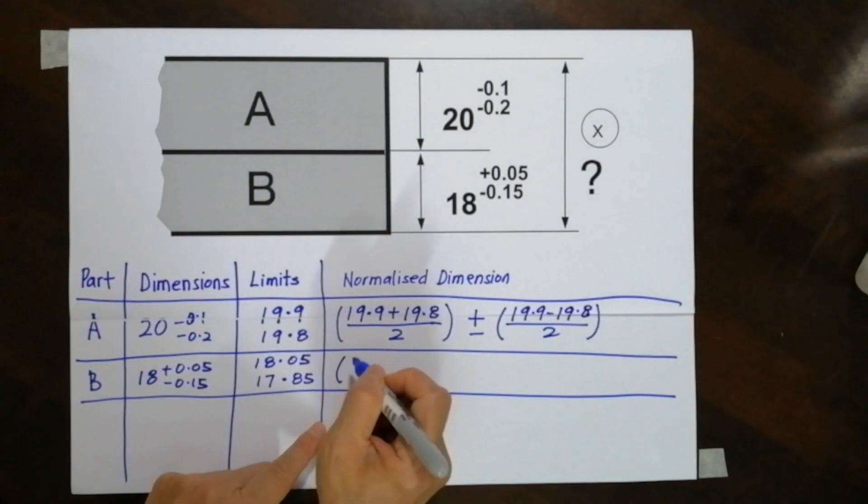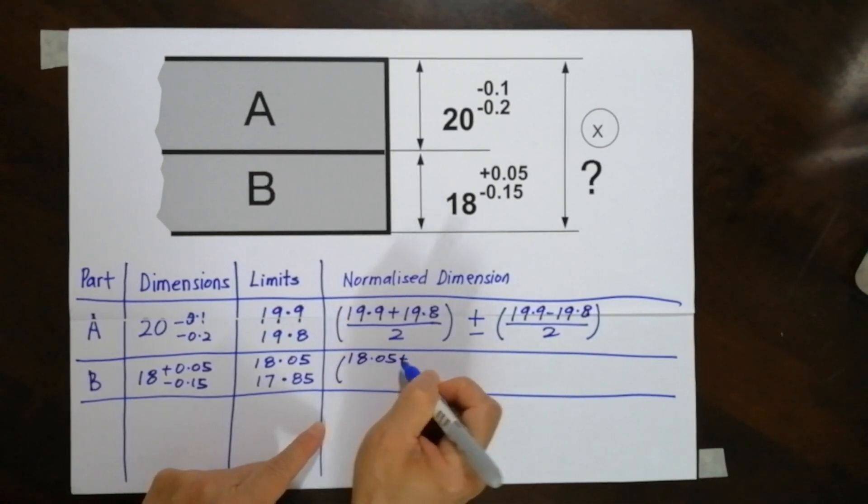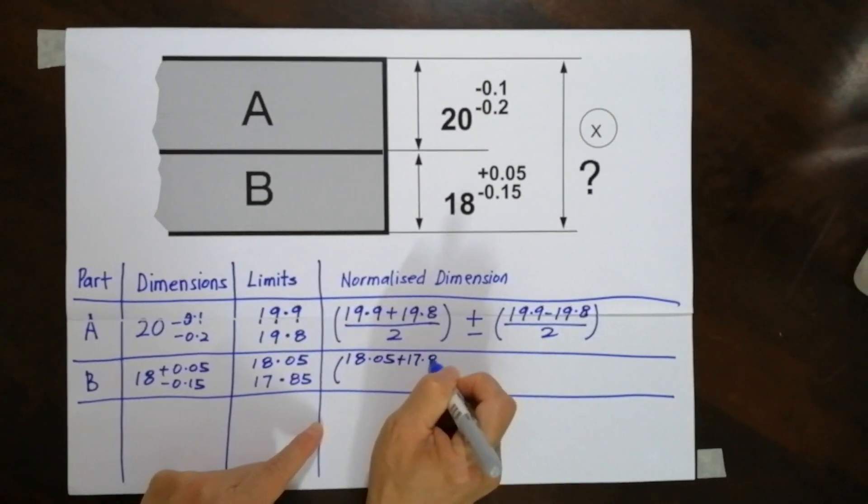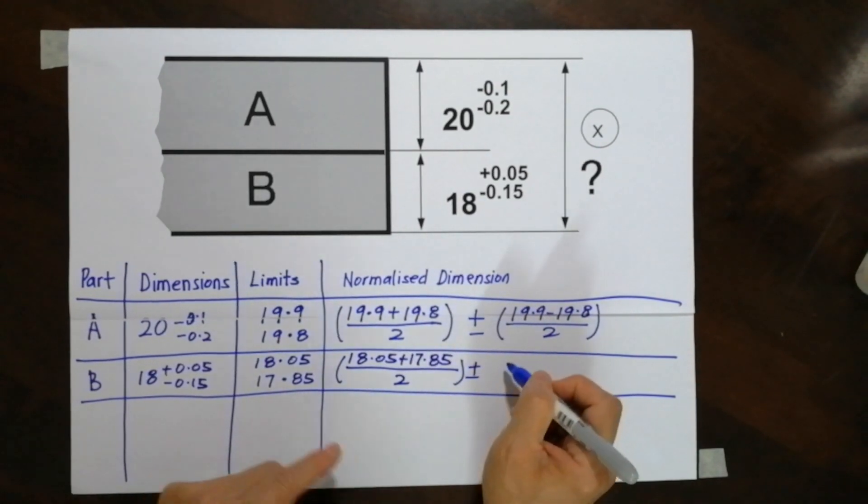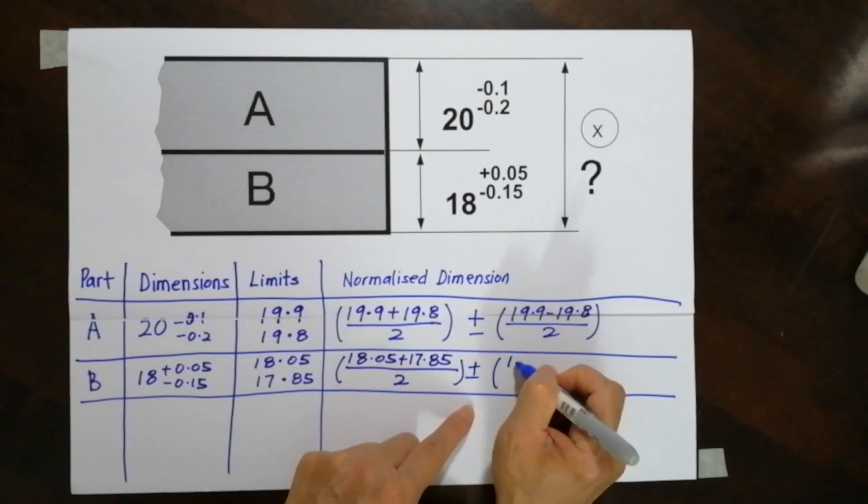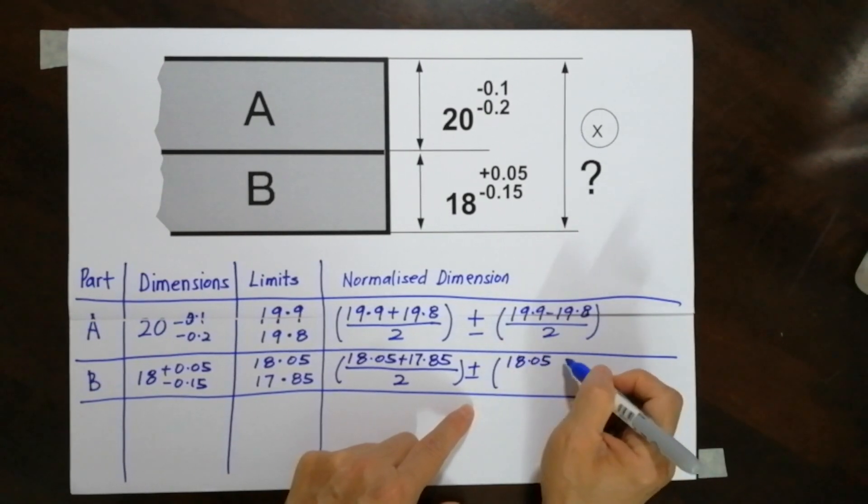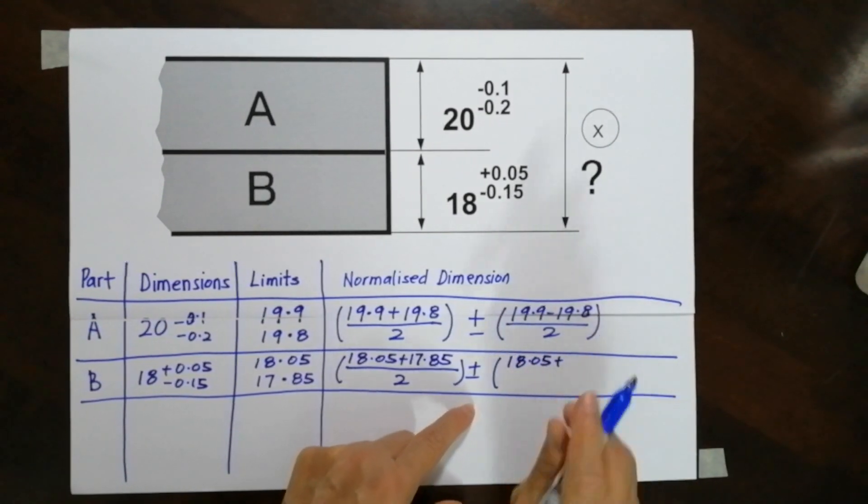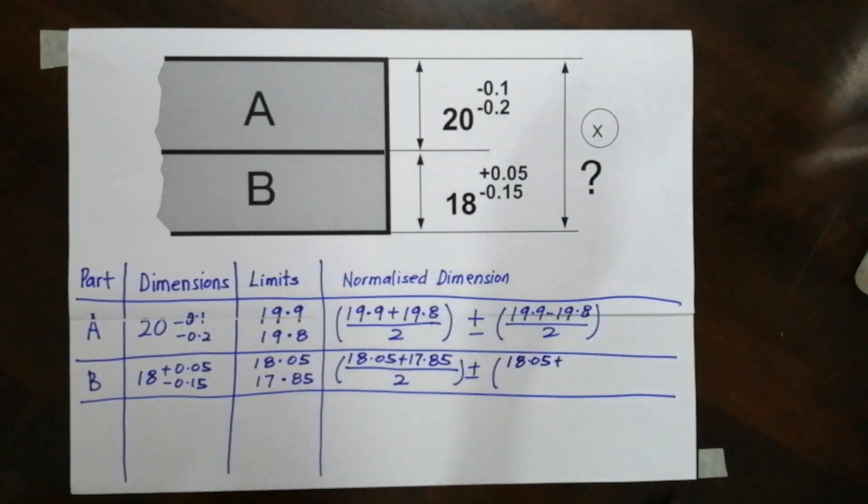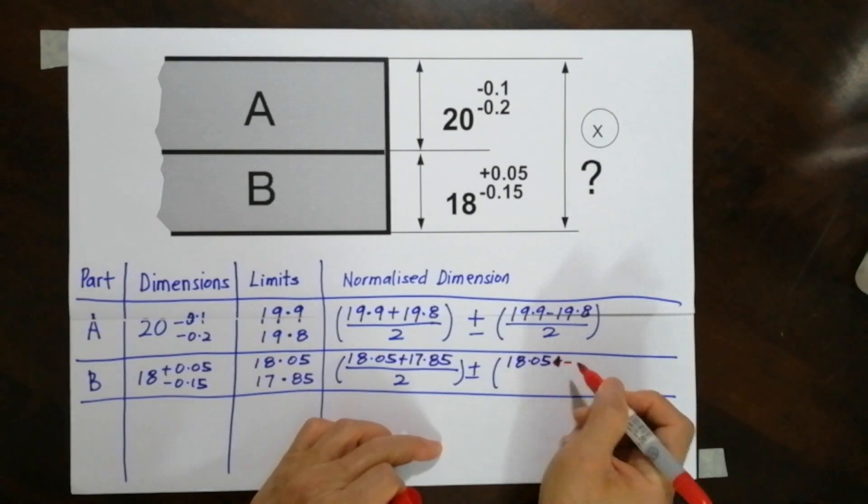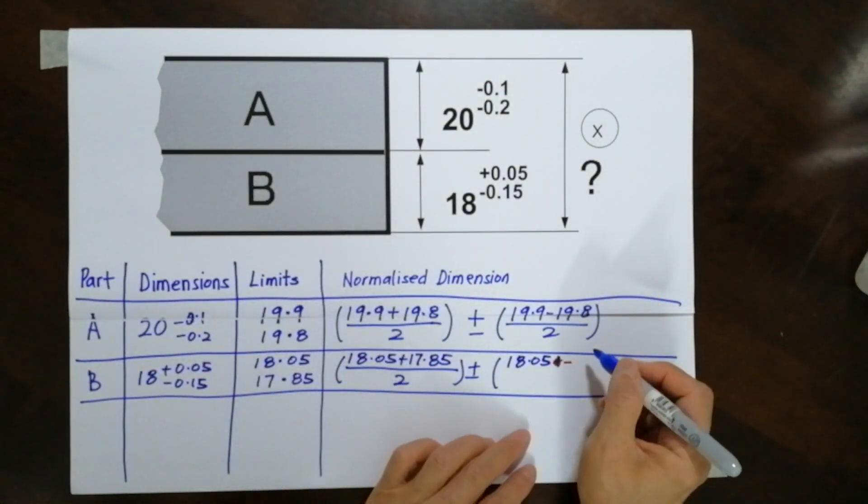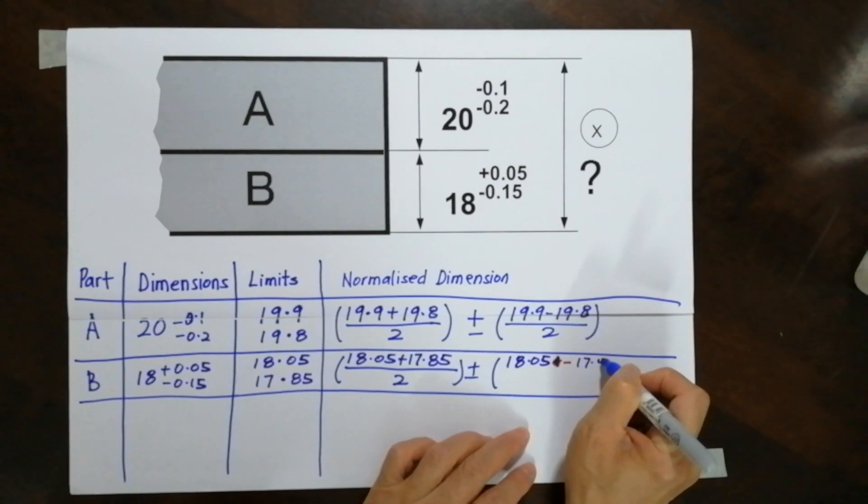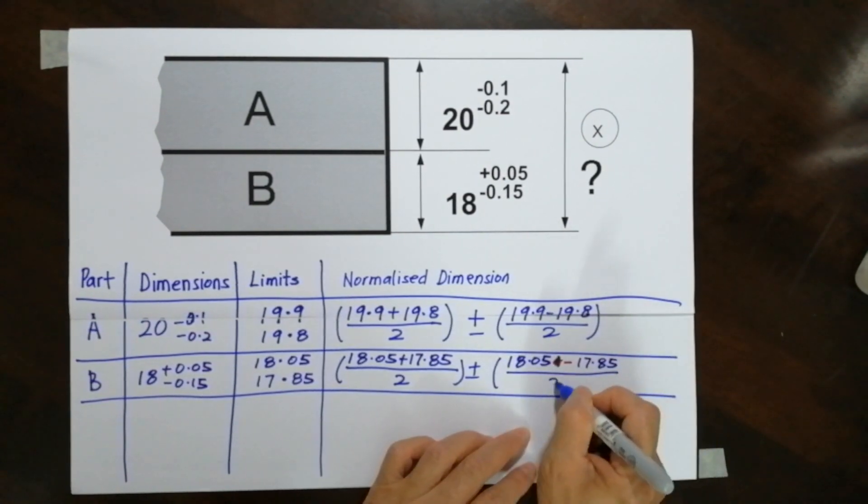Similarly for this one, same thing, 18.05 plus divide by 2, plus and minus. I'm running short of space. Sorry, this is not plus. This has to be subtract. Subtract 17.85, divide by 2.